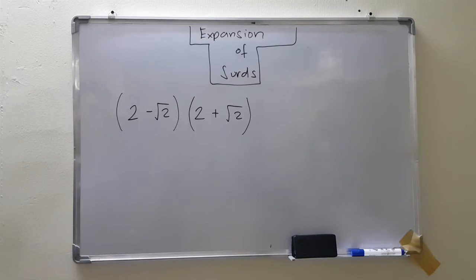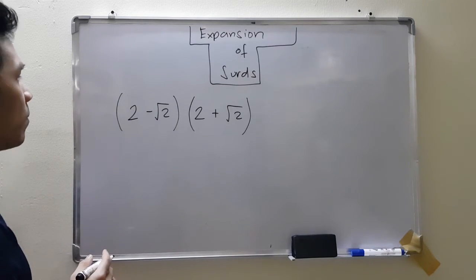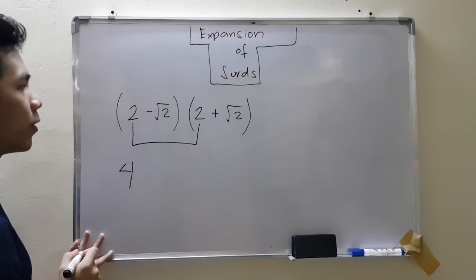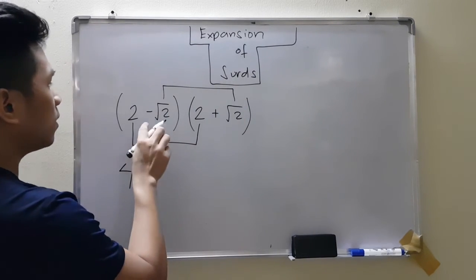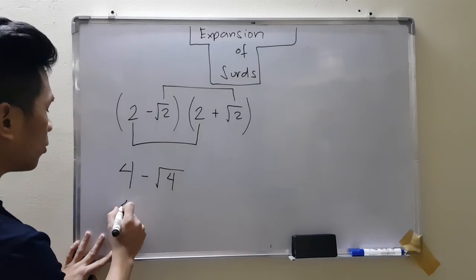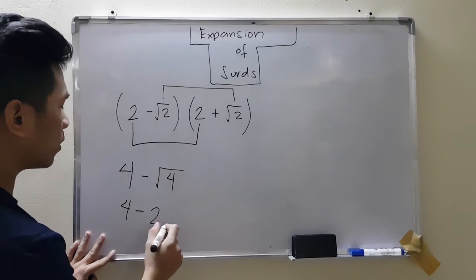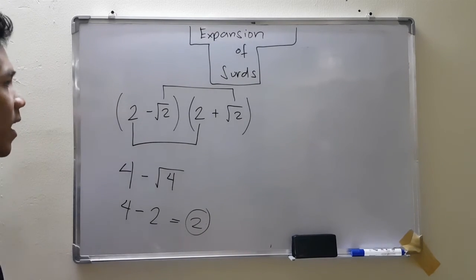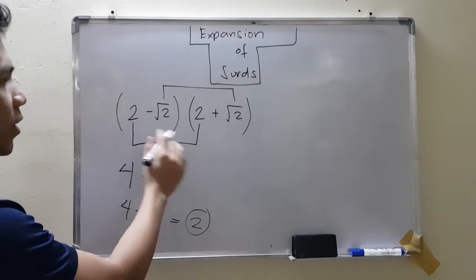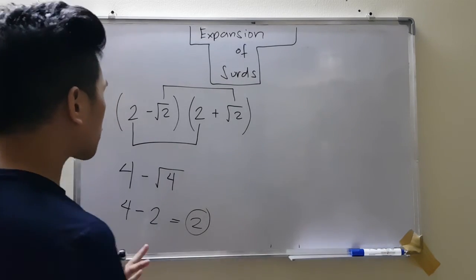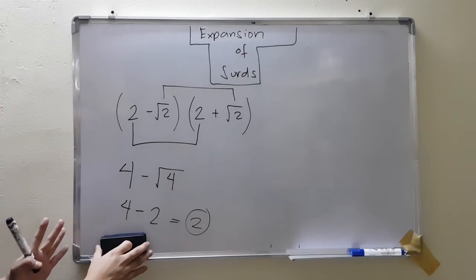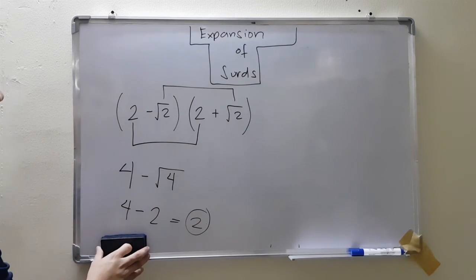There's a shortcut for rationalizing the denominator. Instead of expanding fully, just multiply the first term by the first term: 2 times 2 gives 4. Then multiply the last term by the last term: negative root 2 times positive root 2 gives minus root 4. Simplifying: 4 minus 2 equals 2. The shortcut works because the middle terms always cancel out — you don't need to multiply first by last or second by first. So just multiply the first and last terms, and that's your answer. If you prefer the long way to avoid confusion, that works too.